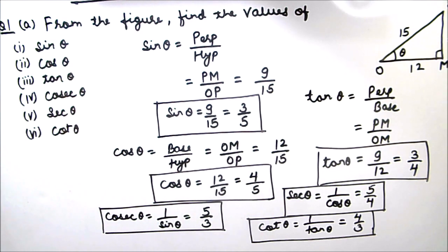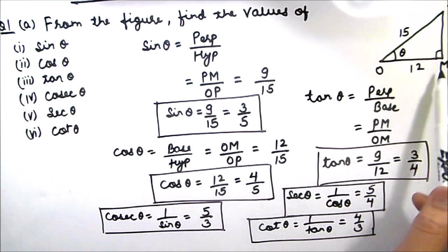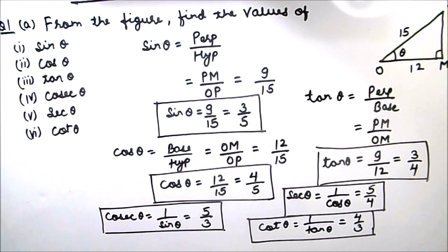So this is how we can find the trigonometric ratios in a right triangle. Let's take a recap: if in a right triangle the lengths of any two sides are given, first we use the Pythagoras theorem to find the length of the third side. When we have all the side lengths, we use them to find the different trigonometric ratios. I hope this video is helpful to you. If you like the video please hit the like button and subscribe to my channel for more math videos. Thanks for watching.